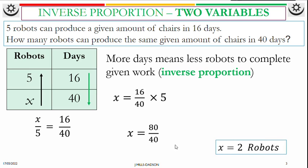Let's see if it makes sense. We had 5 robots working for 16 days. We had only 2 robots working, which means they've got to do more for the other 5. Therefore, we need more days — and it makes sense, 40. So always check your answer to see if it makes sense.